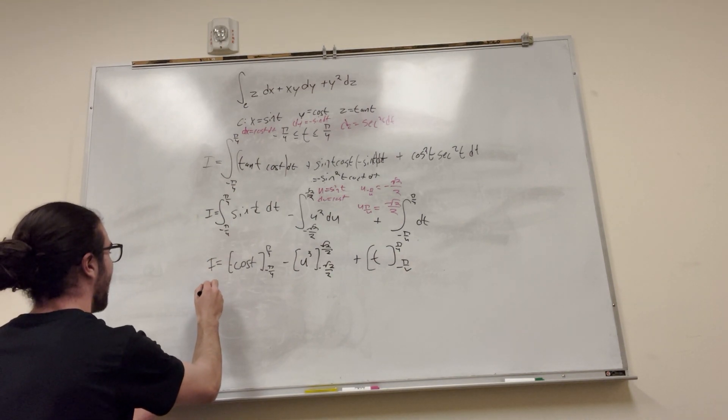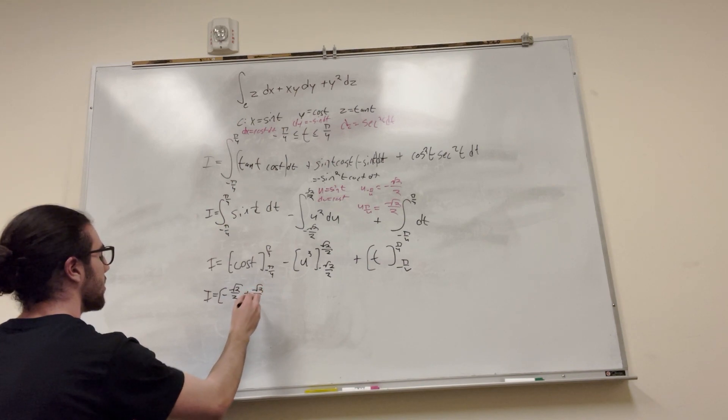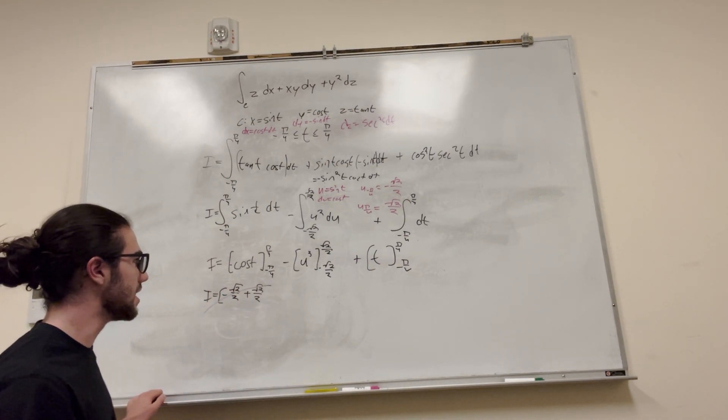Okay. Solving this, I is equal to, so we got negative radical 2 over 2 minus positive radical 2 over 2. So this is going to become 0, not existent.